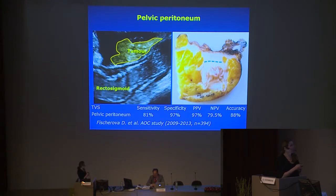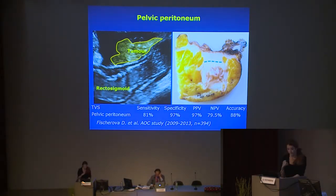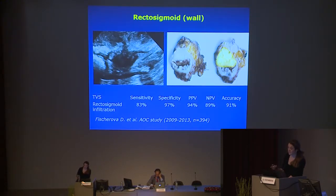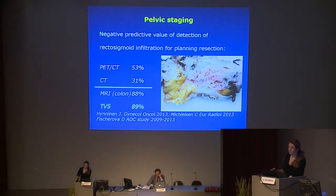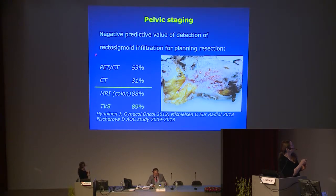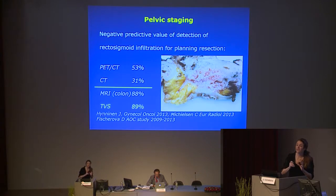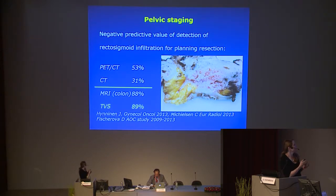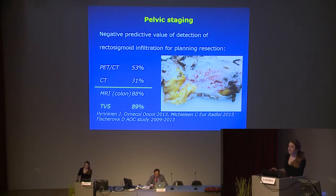From the Prague study on almost 400 patients, the sensitivity in detection of any peritoneal infiltration — including microscopic, not only macroscopic — was high, more than 80%. Detection of rectosigmoid wall infiltration was even higher. If you look at the negative predictive value of PET-CT and CT, they are not adequate to assess the detailed pelvic anatomy and plan rectosigmoid infiltration resection. Currently, according to negative predictive value, there are only two methods to predict pelvic carcinomatosis resection: MRI and transvaginal scan.